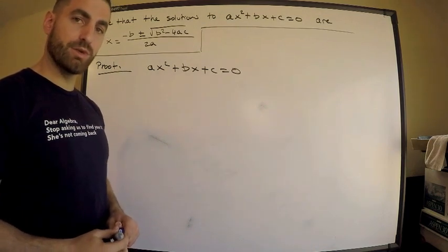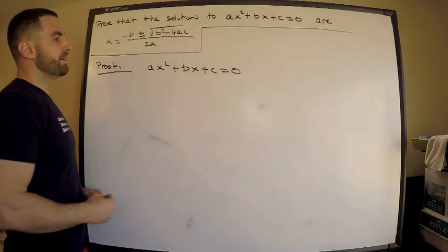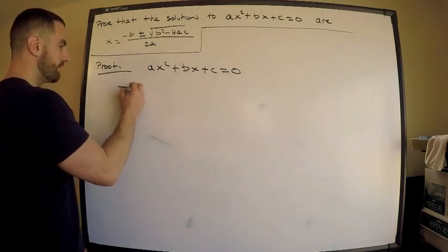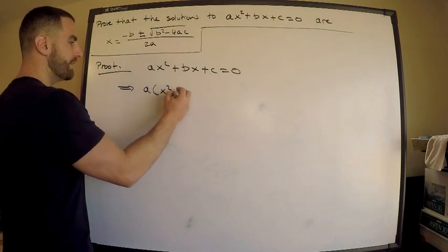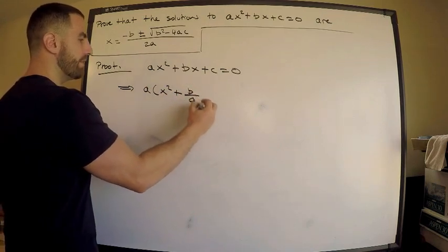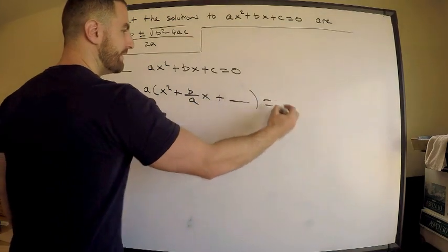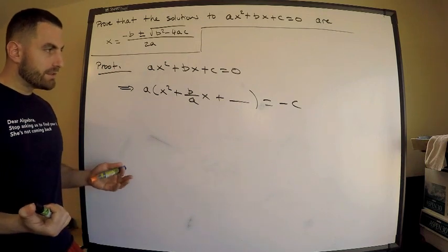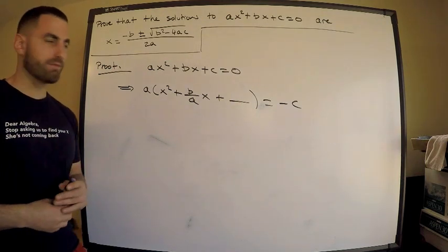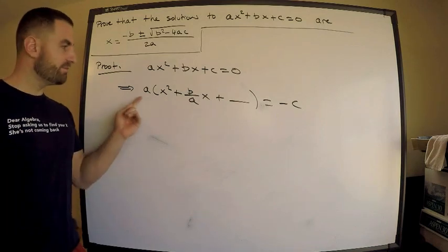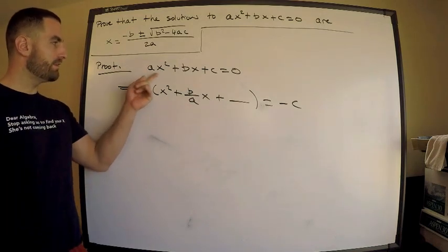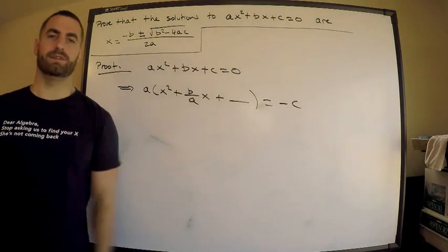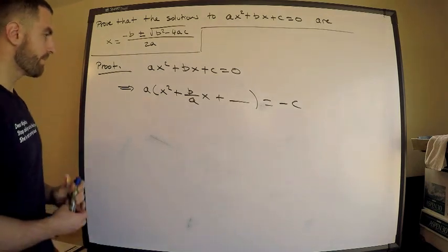So ax squared plus bx plus c equals zero. I'm going to do everyone's pretty much the least favorite thing to do in algebra, and that is completing the square. How do you complete the square? Well, you make sure the leading coefficient's one. How do I do that? Factor out a. Why don't I first bring c over though? So this tells me that a times x squared plus b over a x plus something is equal to negative c. You should be saying okay, yeah, I know exactly what happened, right? If I didn't do anything crazy, distribute the a. a times this is x squared. a times b over a is bx. Leave a blank because I'm going to complete the square. I'm going to c over. No big deal. I'm still in algebra.